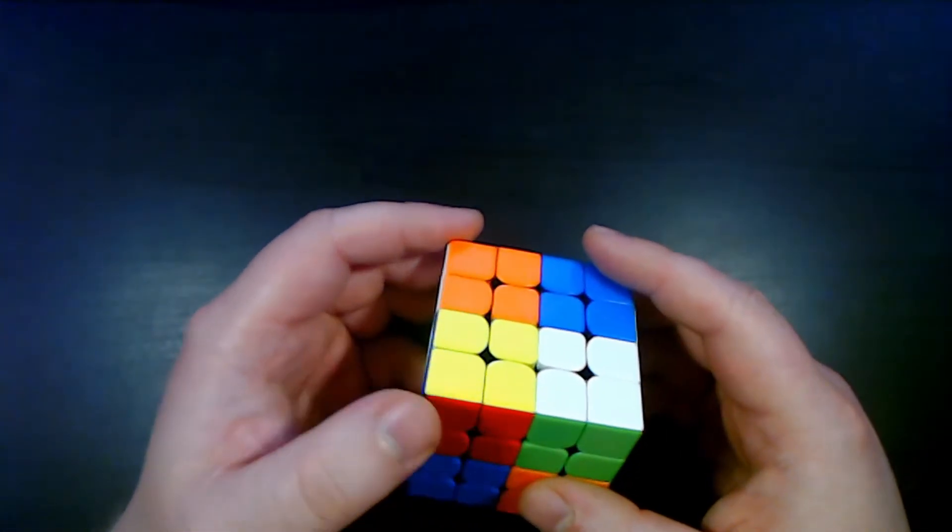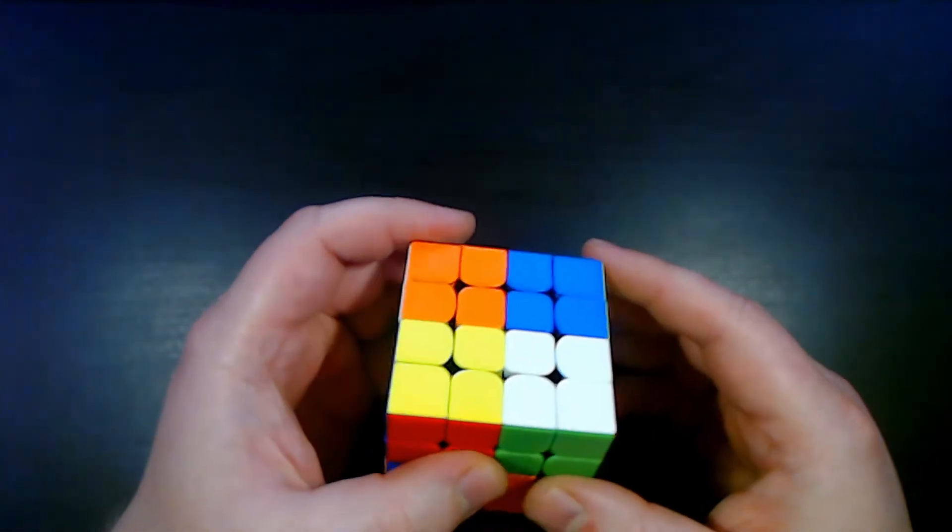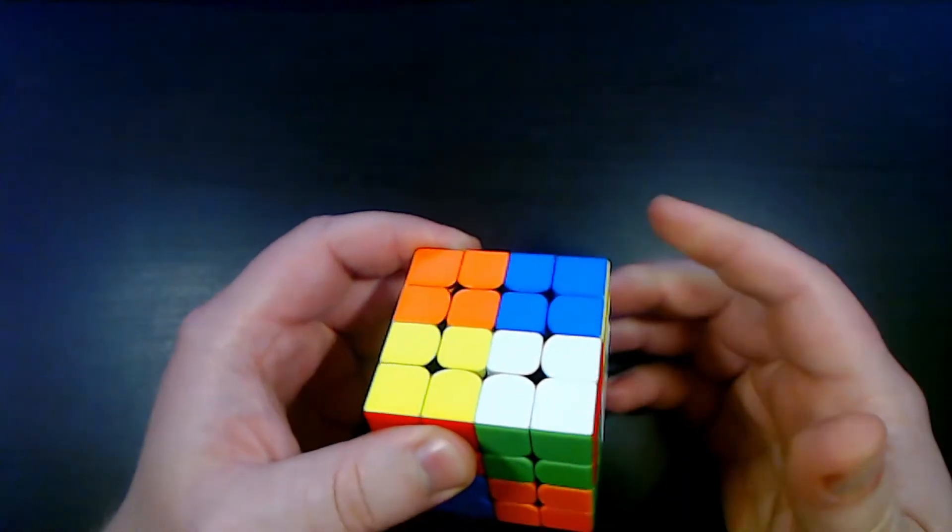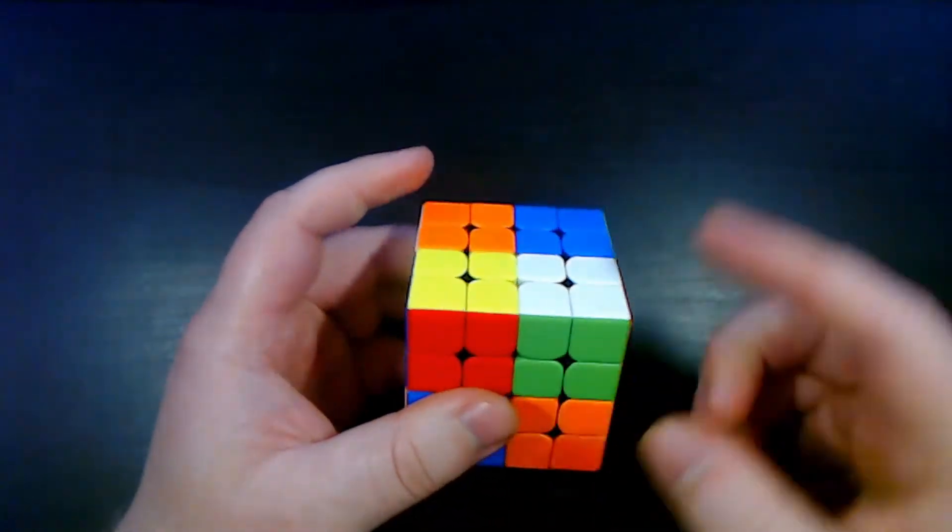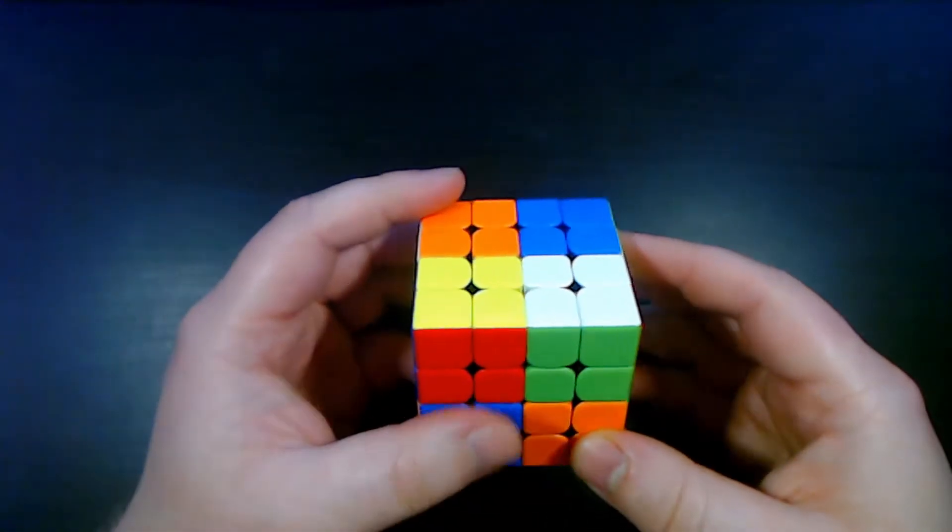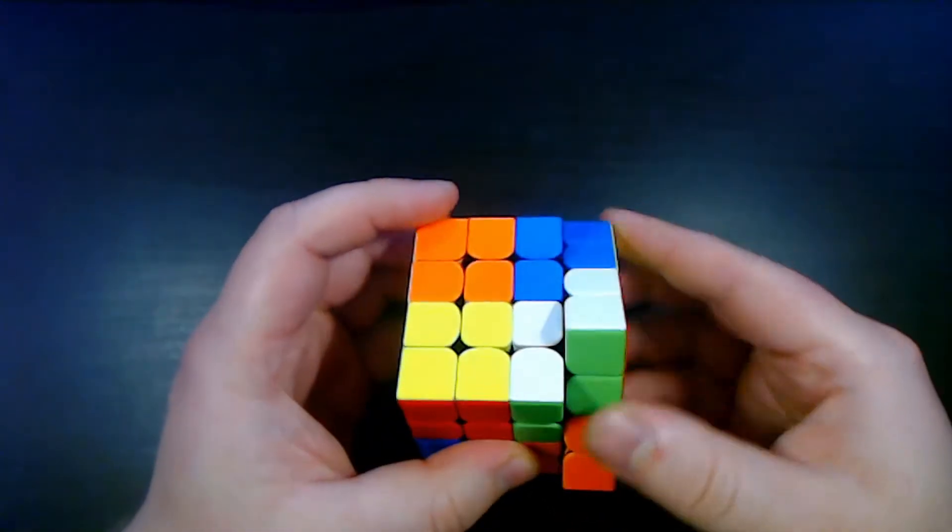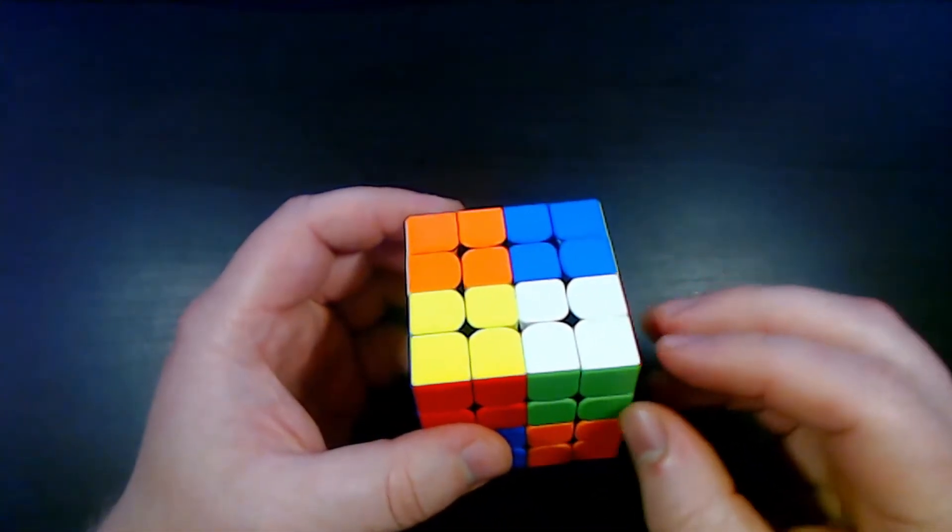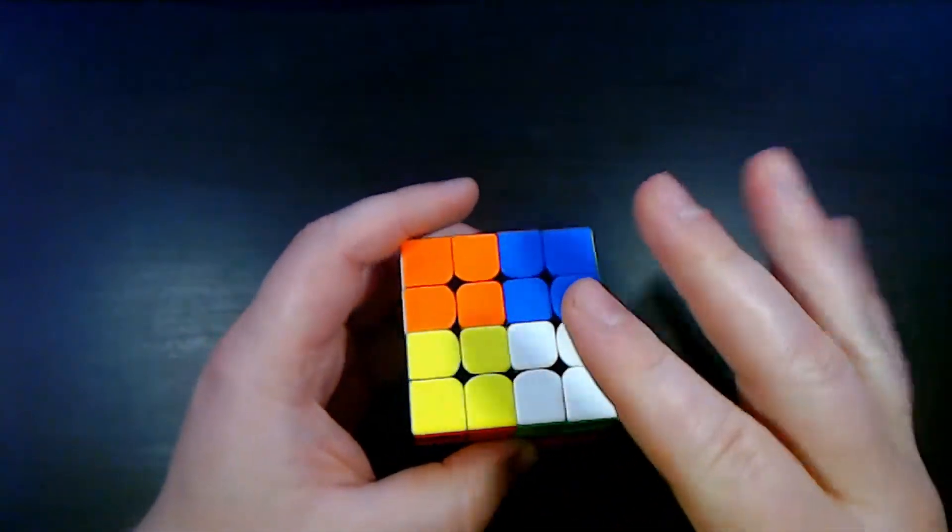There is also a beginner's version which I do have a tutorial for posted on my channel already which only requires you to use a standard T perm and a wide T perm to solve. A wide T perm being the exact same as a T perm just using wide R moves instead of regular R moves. But for this video I will just be talking about the full method not the beginner's version.